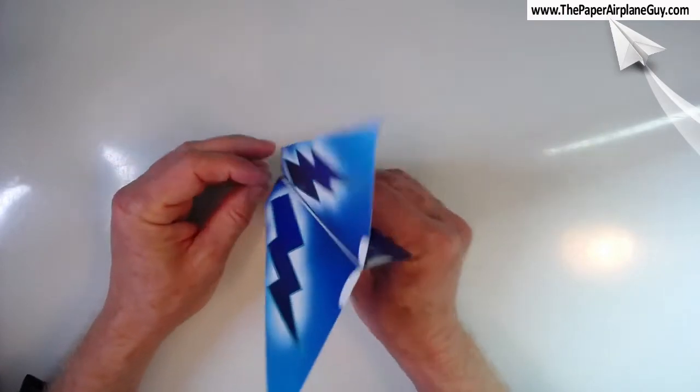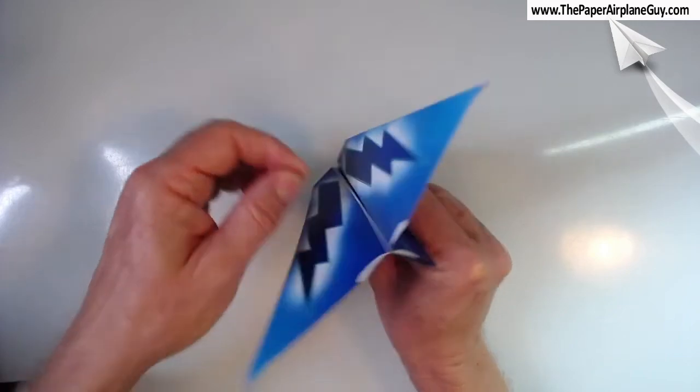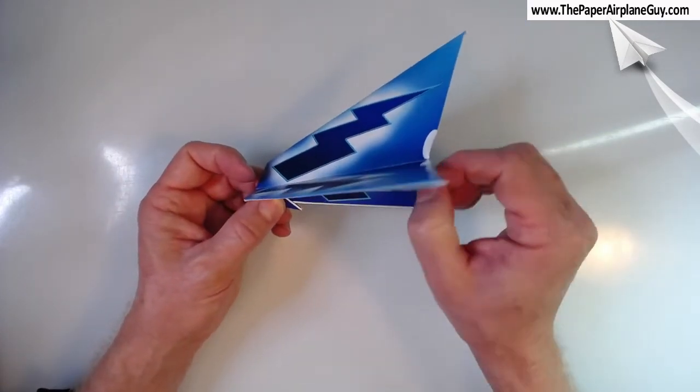You are going to need some up elevator on this plane. You can see the white tabs here are where you do a little up elevator so I'm just going to bend some in right there. If you need to adjust right or left your rudder control is right here.